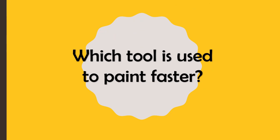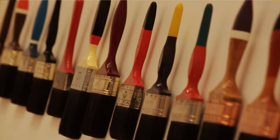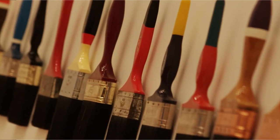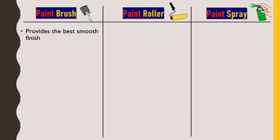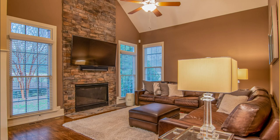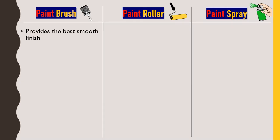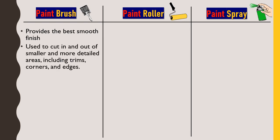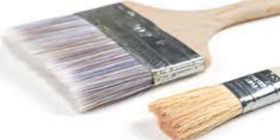Today we'll be talking about all these things in detail. First, we'll talk about the paint brush — our traditional tool, using which we have been painting walls for many years. It provides the best smooth finish compared to any other tool or technology. If used correctly, a painting brush provides the best, smoothest wall finish. It is used to cut in and out of smaller and more detailed areas, including trims, corners, and edges.